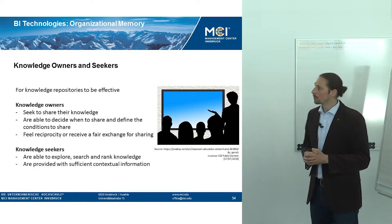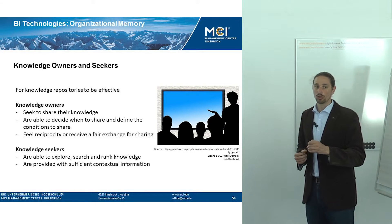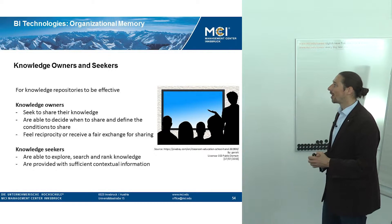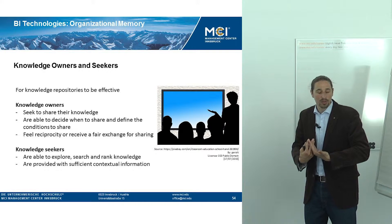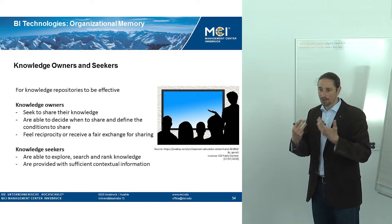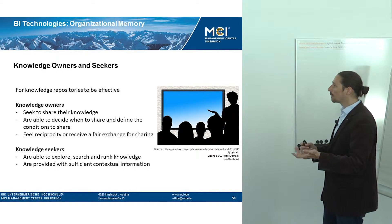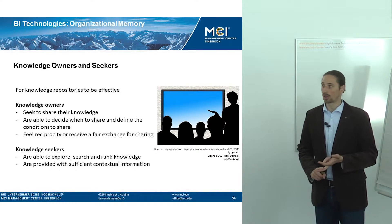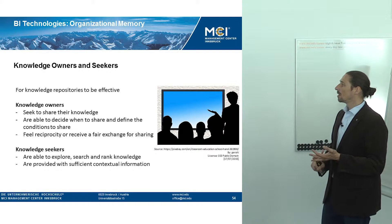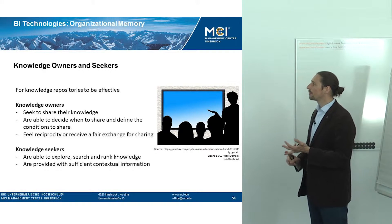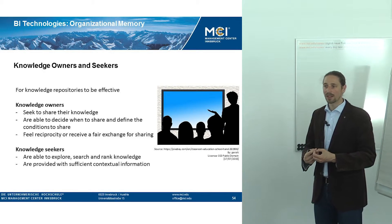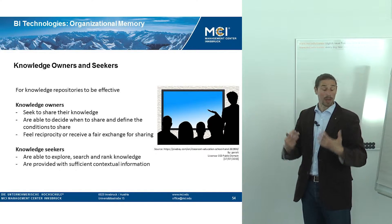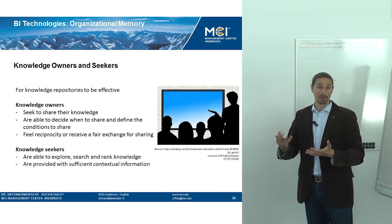For knowledge repositories to be effective, we need two things: knowledge owners and knowledge seekers. The knowledge owners seek to share their knowledge. They have certain knowledge and want to share it. They are able to decide when to share and define the conditions of how to share their knowledge. They feel reciprocity or receive a fair exchange for sharing — either feeling good when able to share knowledge, or getting something back, depending on the type of knowledge sharing.